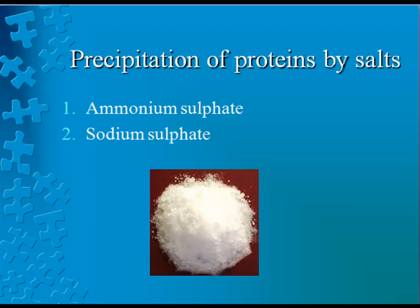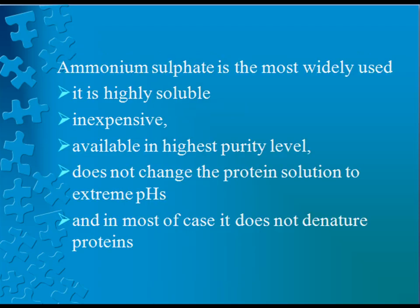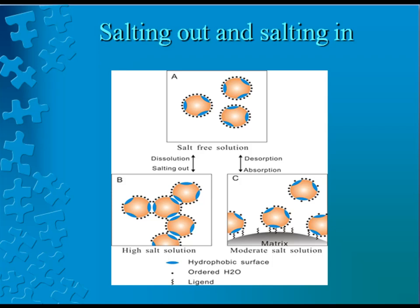Ammonium sulphate and sodium sulphate are the salts used for the precipitation of proteins. Ammonium sulphate is the most widely used because it is highly soluble, inexpensive, and available in highest purity levels. It does not change the protein solution to extreme pH, and in most cases it does not denature proteins.